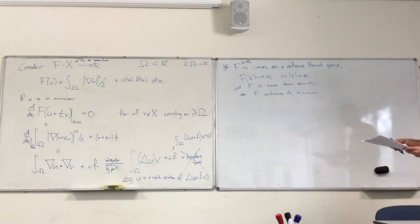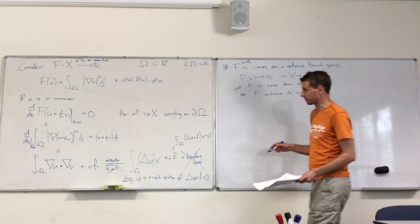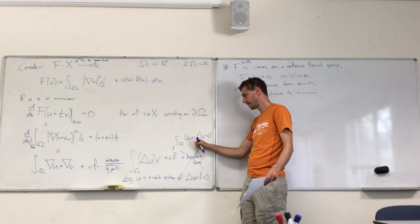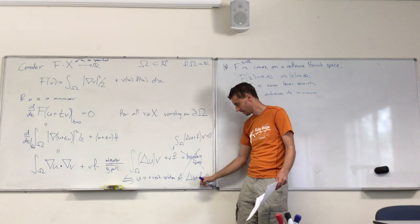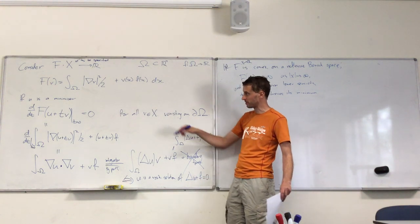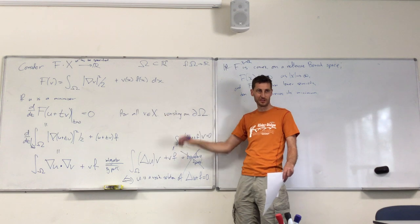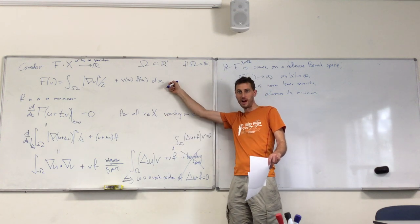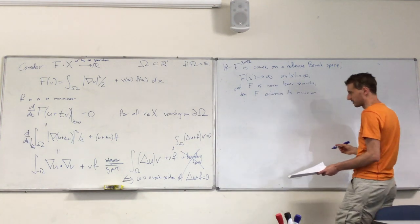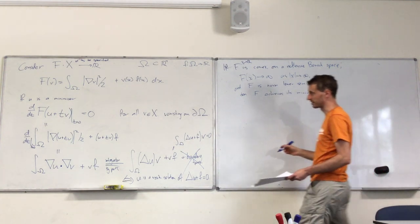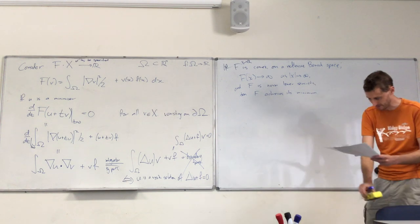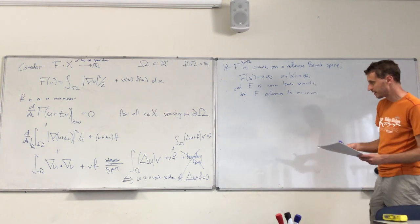So that's exactly saying that u satisfies: the integral of (−Δu + f) times v equals 0, which is a weak solution of the equation −Δu + f = 0. Weak in the sense that it's not necessarily literally a solution, but if you multiply by any other function in the space and integrate, you always get 0. You can sort of reverse-engineer this: given a differential equation, you can imagine finding a functional whose minimizer is guaranteed to be a weak solution.